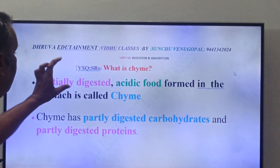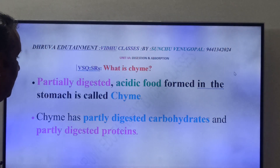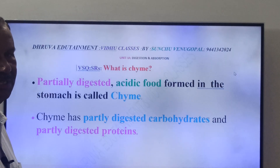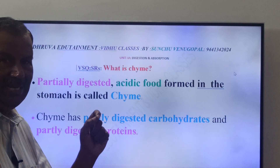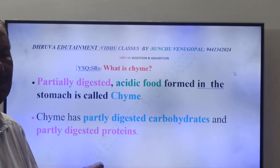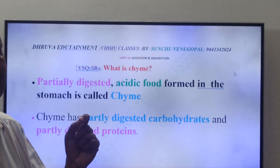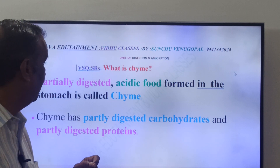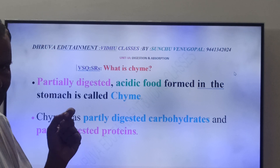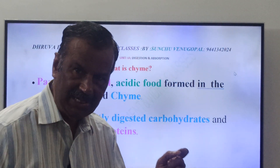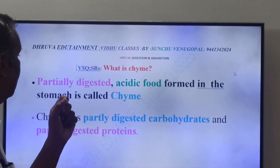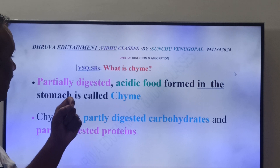Once again, friends, you have to write this definition. What is Chyme? Chyme is partially digested acidic food formed in the stomach. Partially digested acidic food formed in the stomach is called Chyme.